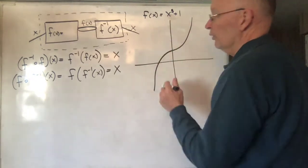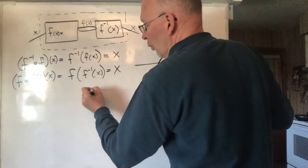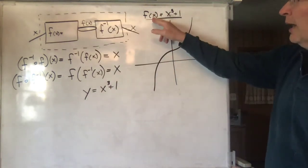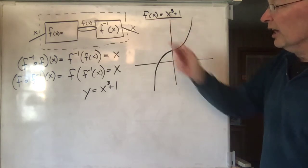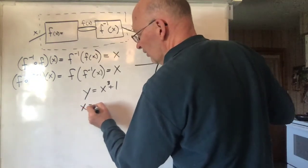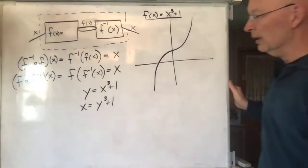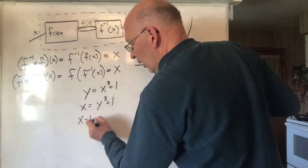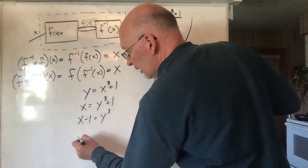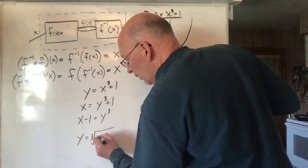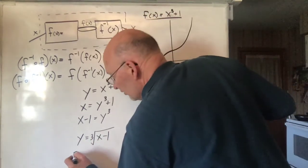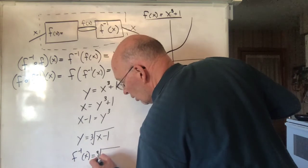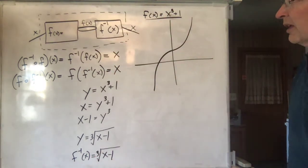Here's the mechanical way to find the inverse. You start with the equation, first put a Y where F of X is. Then you interchange the X and the Y, so you get X is equal to Y cubed plus 1. Now solve it for Y: X minus 1 equals Y cubed, so Y is equal to the cubed root of X minus 1. That is the formula for F inverse.